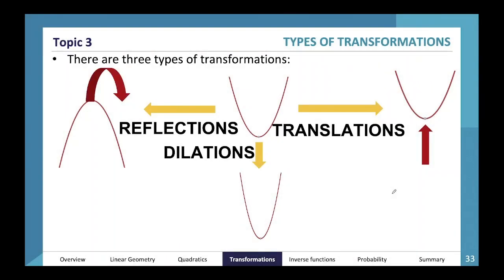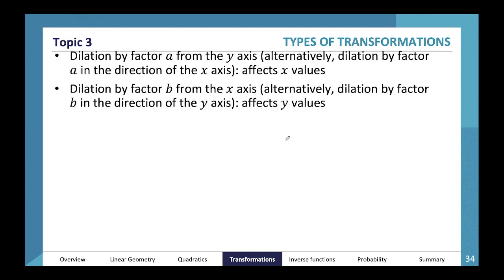Let's talk about transformations. There are three main types: reflections, where we flip a shape in the plane; dilations, which stretch and squeeze; and translations, where we just shift our graph around — we can move it upwards or sideways.